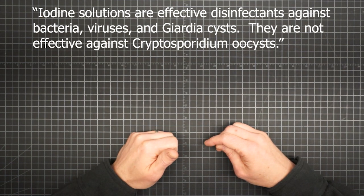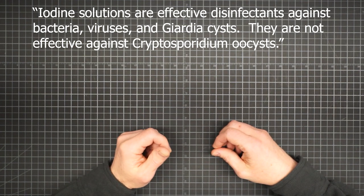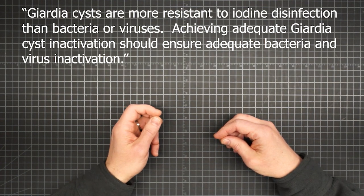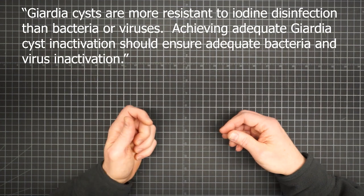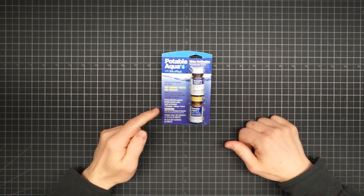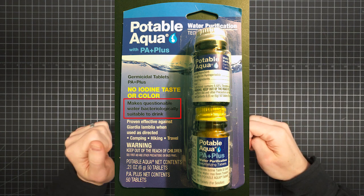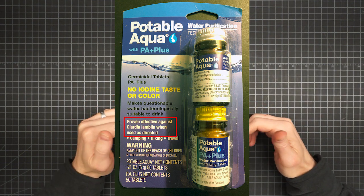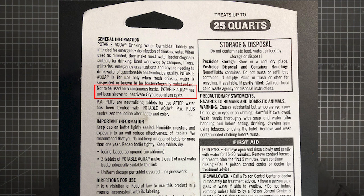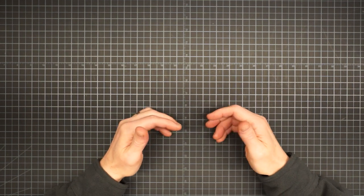In conclusion, iodine solutions are effective disinfectants against bacteria, viruses, and Giardia cysts. They are not effective against Cryptosporidium oocysts. And Giardia cysts are more resistant to iodine disinfection than bacteria or viruses. So achieving adequate Giardia cyst inactivation should ensure adequate bacteria and virus inactivation. And to their credit, Potable Aqua is completely honest about this on their label. On the front, it only says that questionable water is made bacteriologically safe, and it says proven effective against Giardia lamblia when used as directed. On the back, it specifically states: Potable Aqua has not been shown to inactivate Cryptosporidium cysts.